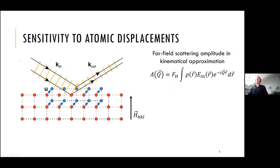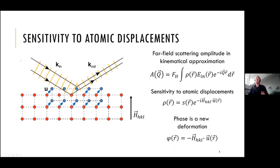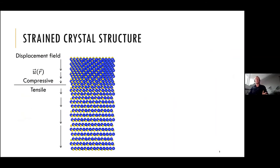By writing the far-field scattering amplitude in kinematical approximation for Bragg scattering, we see that we become sensitive to deformations inside the crystal, located in the phase of the complex-valued object function. The shape S describes the morphology, while the phase encodes the deformation. By reconstructing the phase, we extract the displacement field — how atoms are displaced from their equilibrium positions. By measuring a certain HKL reflection, we access only a projection onto that direction. A strained crystal can show compressive or tensile strain. If the crystal is unstrained, we observe the original peak position; with homogeneous strain, the peak shifts in Q-space; with inhomogeneous strain, peaks broaden or become asymmetric.